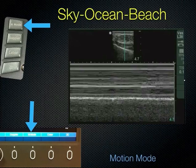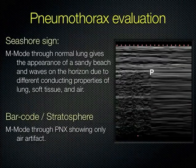If the lung has dropped, the beach disappears — you just have stripes all the way down because you're only getting reverberations from the soft tissue. You can't see the lung or its motion. The beach drops out of the picture and you have a barcode or stratosphere sign, indicating pneumothorax.